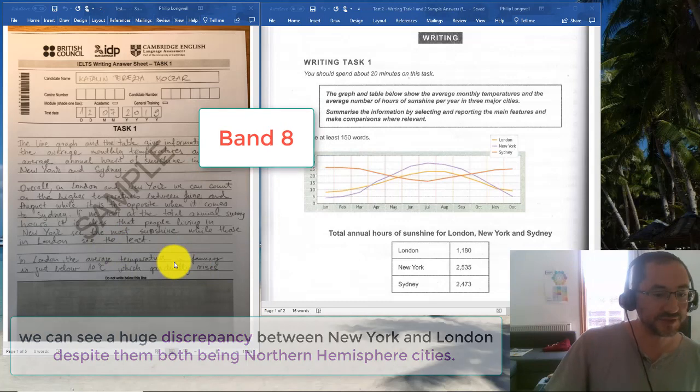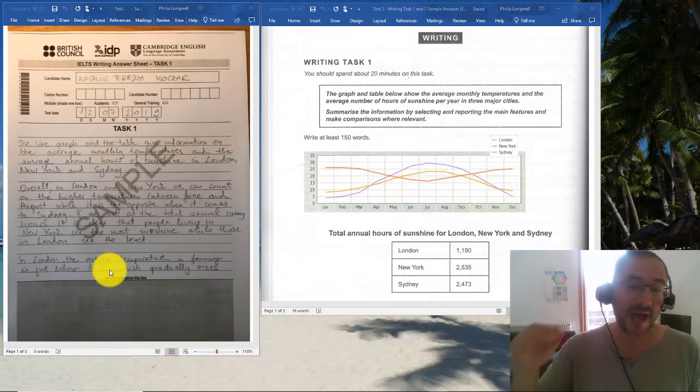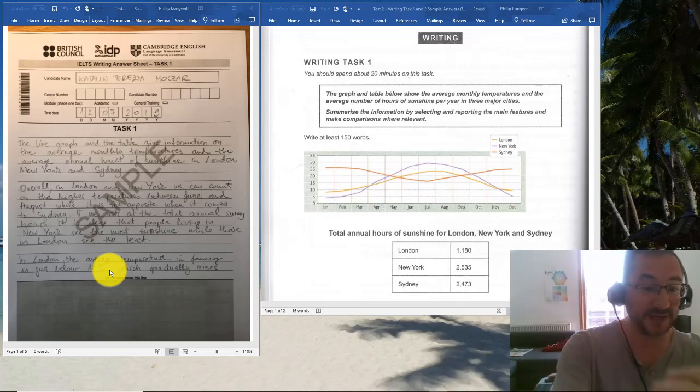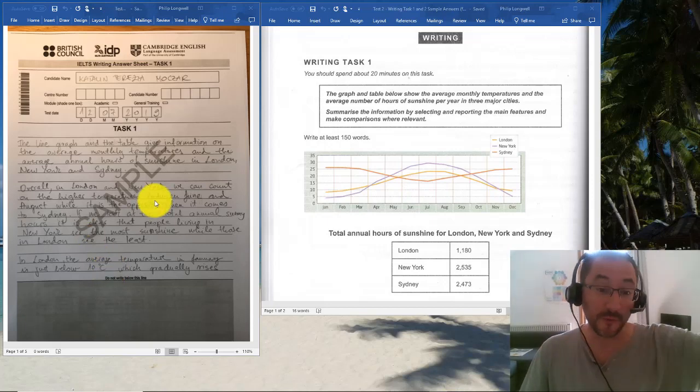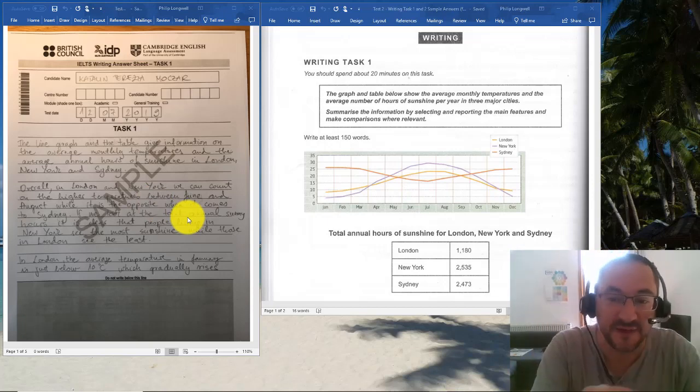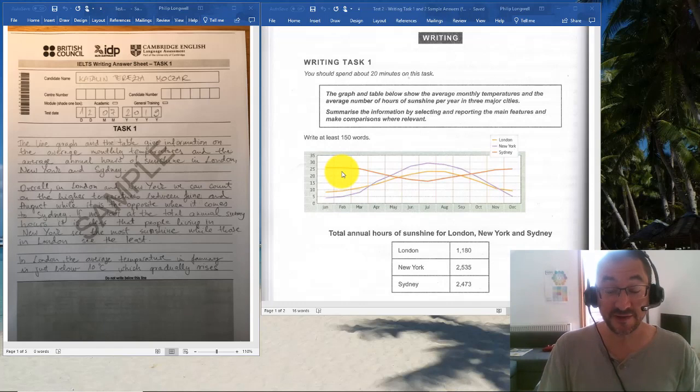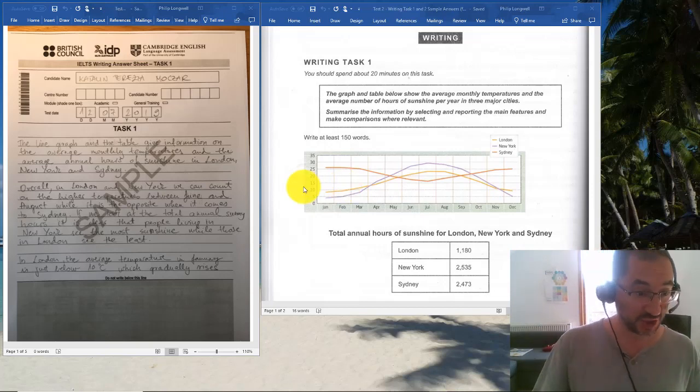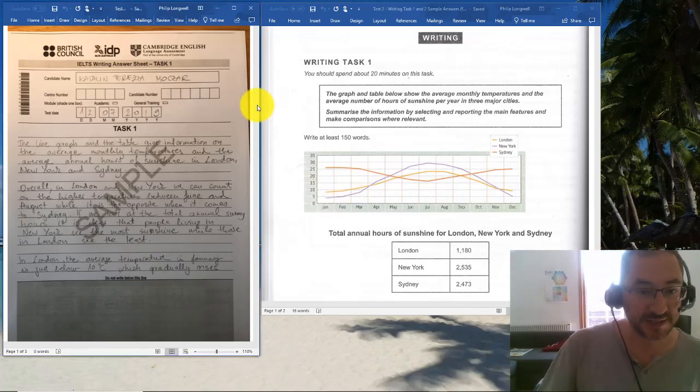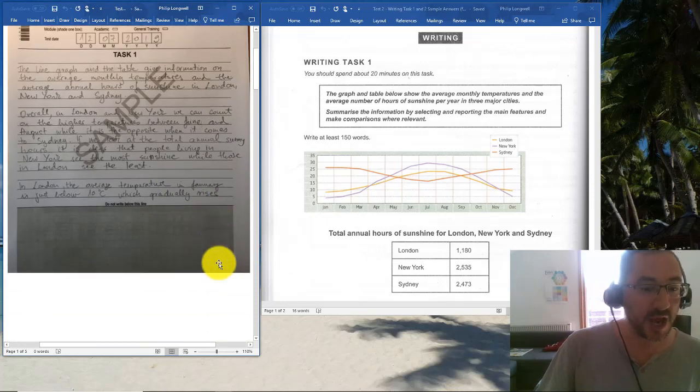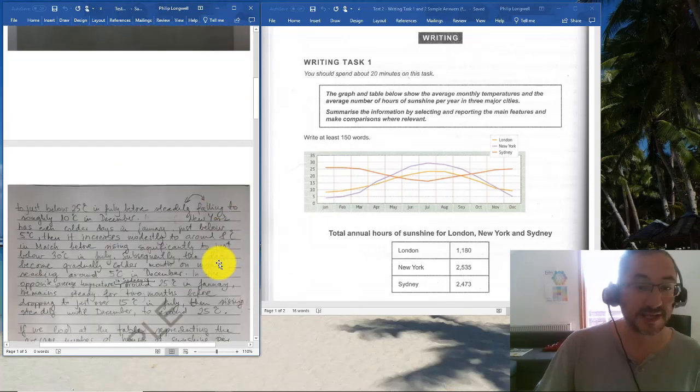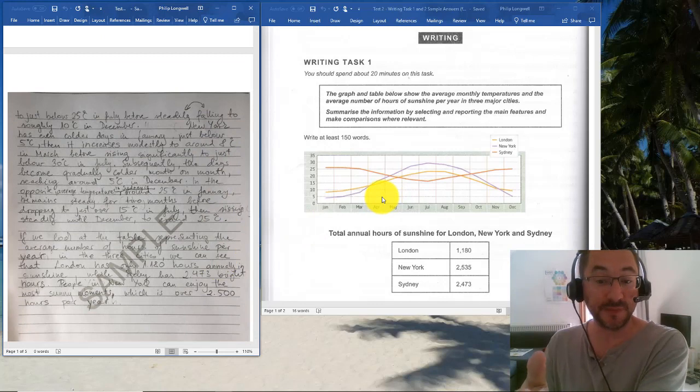In London, the average temperature in January is just below 10 degrees. Now we're going into the details. This is what I always advise students: after that introduction, after that overall paragraph, we drill down and we look at specific features we pick out. And this is when we need to accurately represent what is on the line chart. You said that the temperature in London is just below 10 degrees, which gradually rises—that's good—to just below 25 degrees in July.